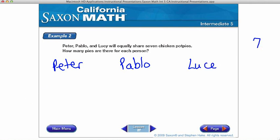So chicken pot pies. So if I do the whole one for you, one for you, one for me. Here's a pie for Peter, a pie for Pablo, and a pie for Lucy. Here's a second pie for Peter, a second pie for Pablo, and a second pie for Lucy.